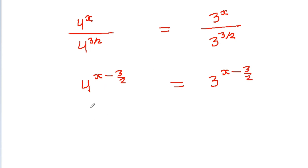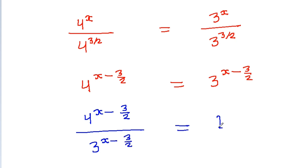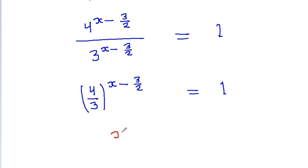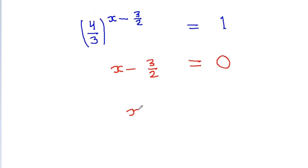Now we get 4 to the power (x minus 3/2) divided by 3 to the power (x minus 3/2) is equal to 1, which we can write as (4/3) to the power (x minus 3/2) is equal to 1. So we get x minus 3/2 is equal to 0, and thus x is equal to 3/2.